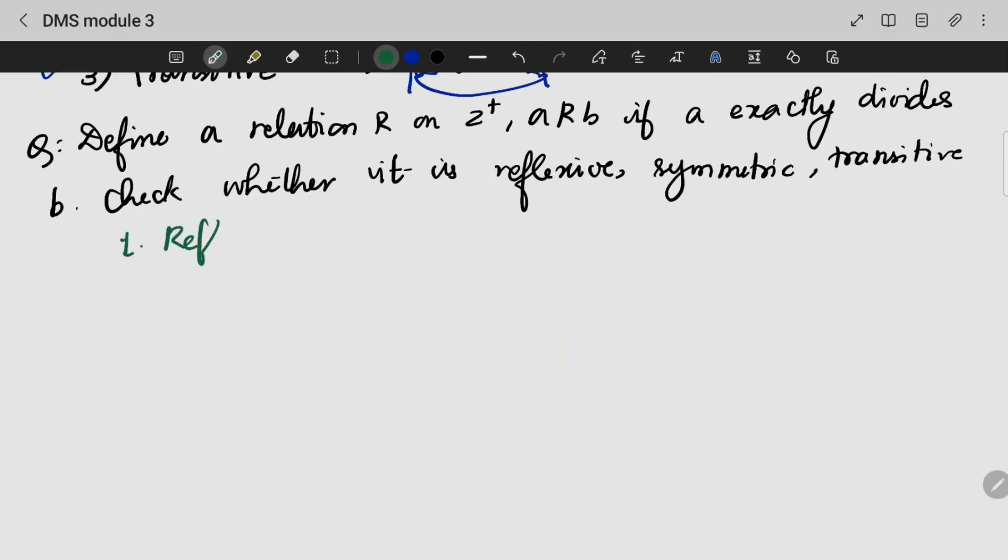The first part is reflexive. If (a,a) is a part of R, or if a is related to a, a divides a. Yes, a number will divide itself. That is true which means that this relation is reflexive.